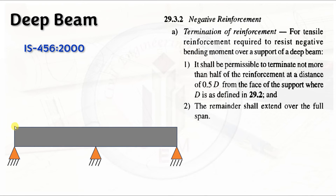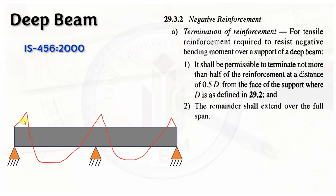Let me explain clearly with a diagram. For a continuous beam, the bending moment diagram will show negative reinforcement provided over the support (hogging moment) and positive reinforcement at midspan (sagging moment). The arrangement of negative reinforcement in that hogging zone is what this clause addresses.